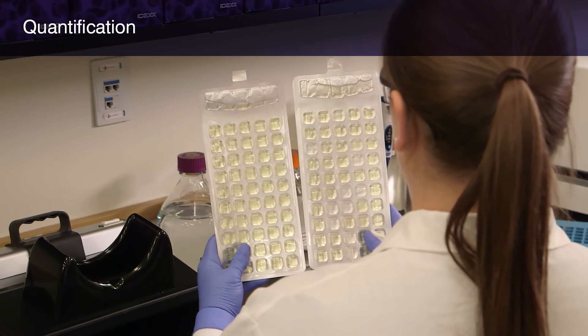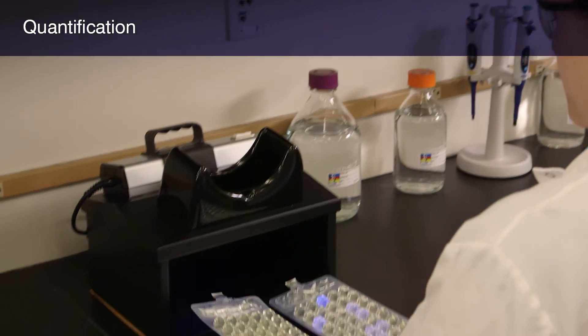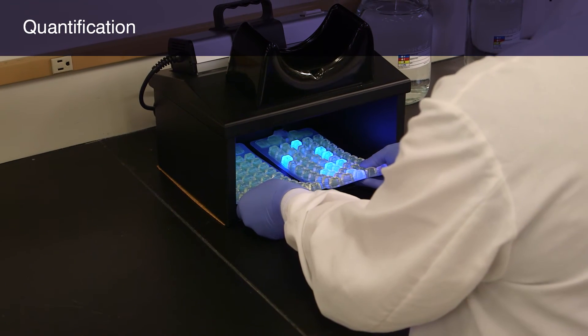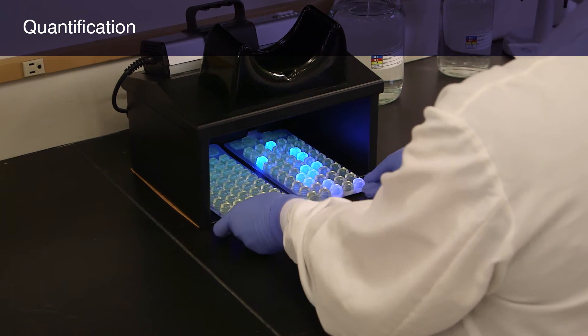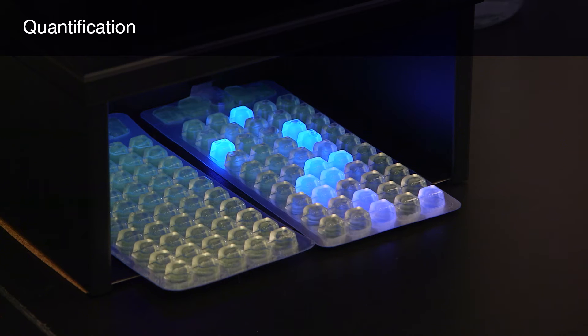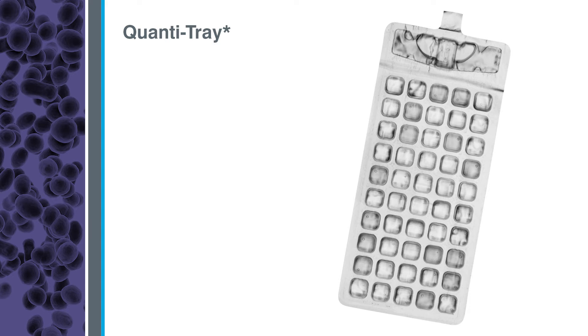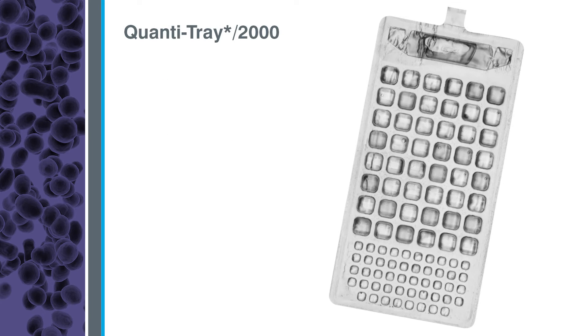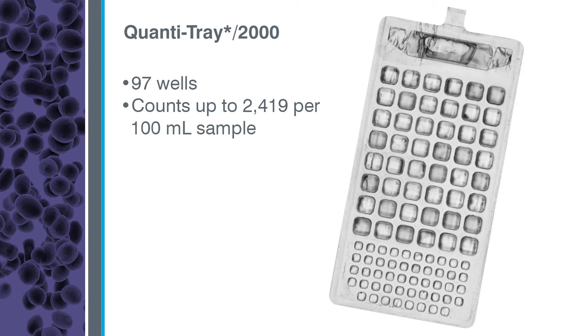Next, you'll learn to use the Enteralert test with the Quantitray system to determine the number of enterococci in a water sample. IDEXX offers two sizes of Quantitray. Both work with the Quantitray sealer. The standard Quantitray is a disposable 51-well tray that provides counts up to 200 per 100 ml sample without dilutions. The Quantitray 2000 is a disposable 97-well tray that provides counts up to 2,419 per 100 ml sample without dilutions.